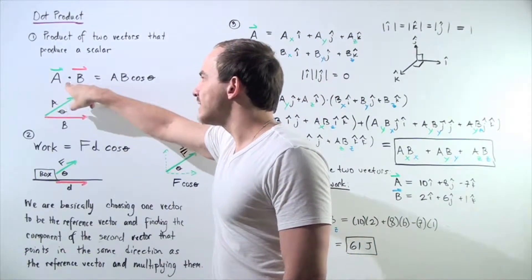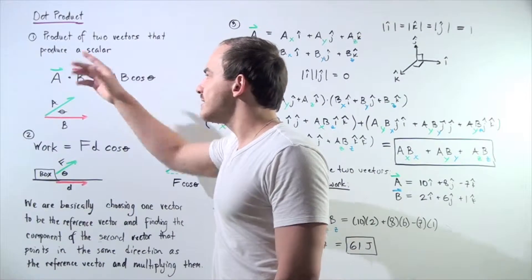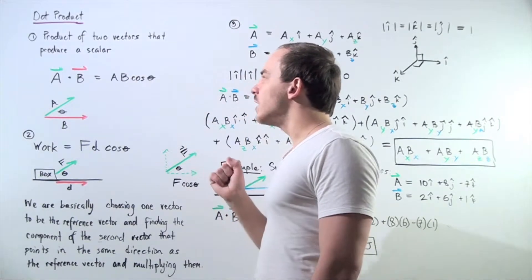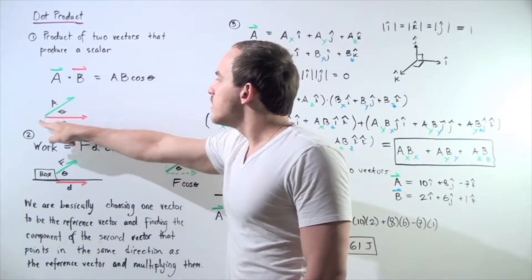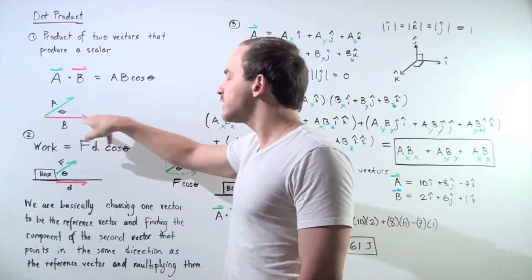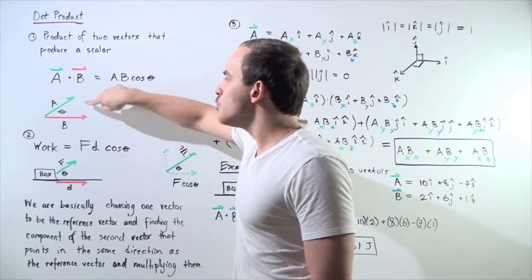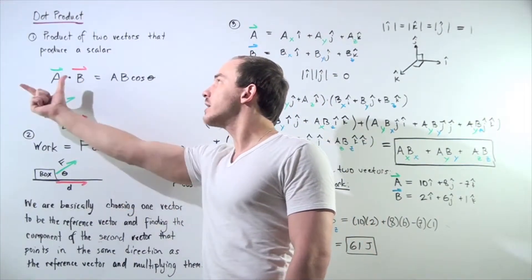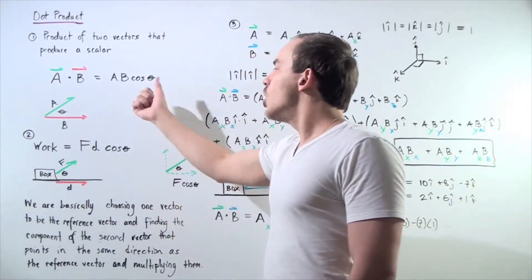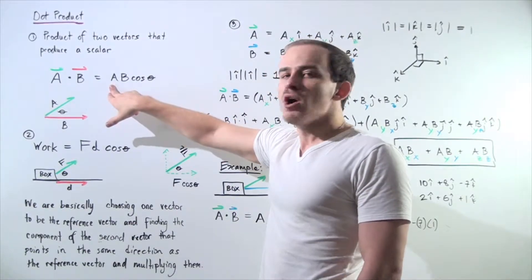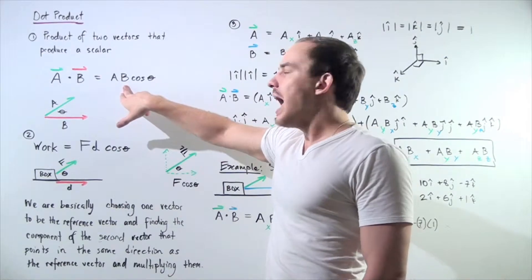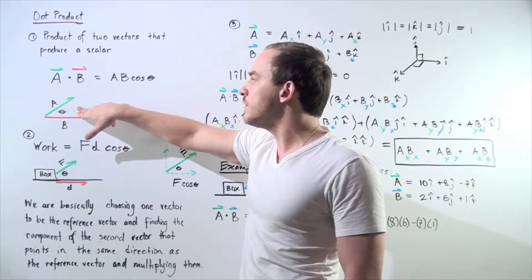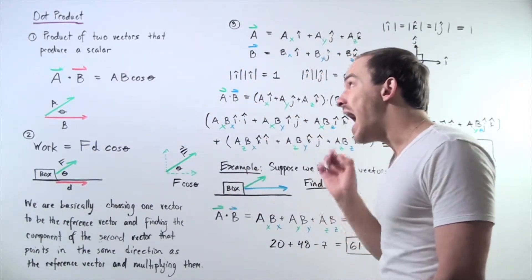Vector A dot vector B, where the dot simply means we're multiplying. If we have two vectors, vector A and vector B, and the angle separating the two vectors is theta, to find the scalar value of the dot product we simply take the magnitude of vector A, multiply it by the magnitude of vector B, and multiply that by the cosine of the angle separating our two vectors A and B.